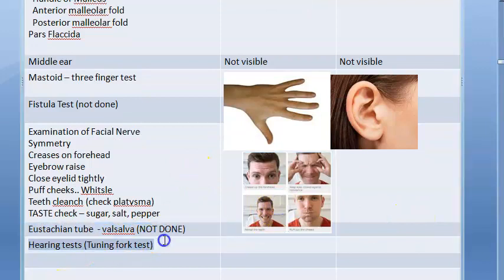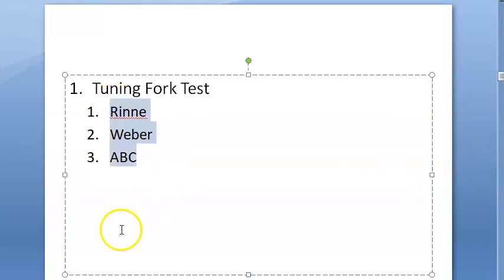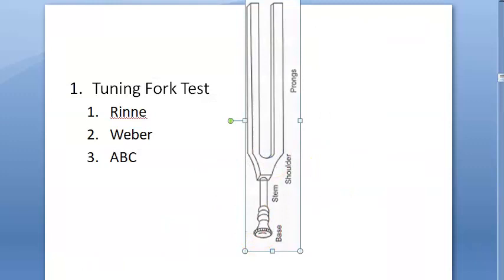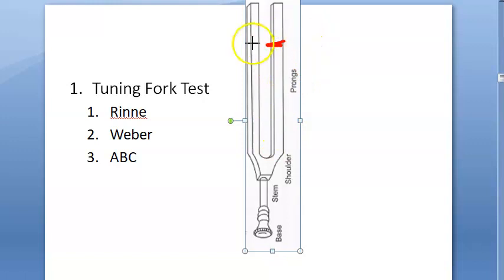For hearing tests using a tuning fork, perform Rinne's test, Weber's test, and ABC on both ears and report findings. Know the parts of the tuning fork: prongs, shoulder, stem, and base. Strike at the junction of the anterior one-third and posterior two-thirds on your thenar or hypothenar eminence.